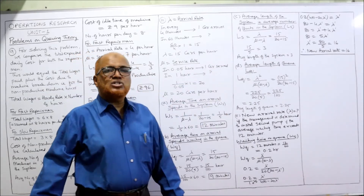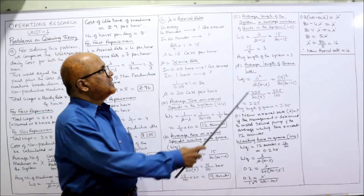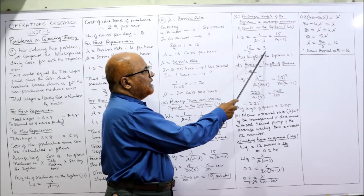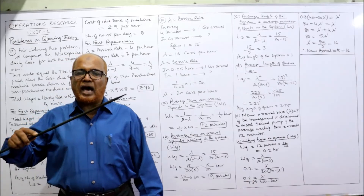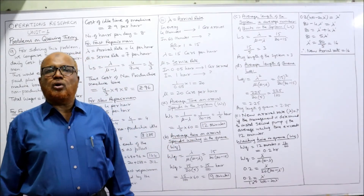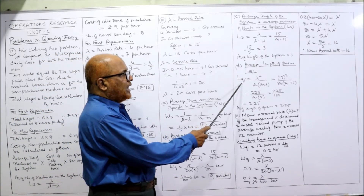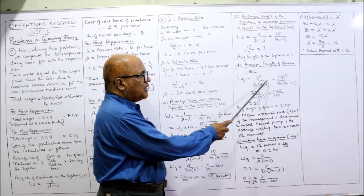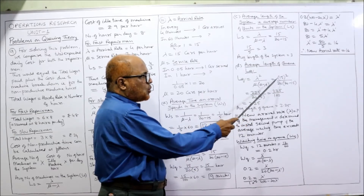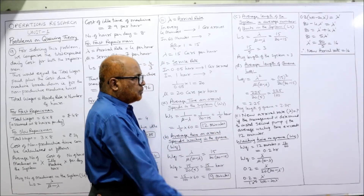Third question: average length of the system (Ls). Ls equals lambda divided by mu minus lambda equals 15 divided by 20 minus 15, which is 15 by 5 equals 3 units. Fourth question: average length of the queue (Lq). Lq equals lambda squared divided by mu times (mu minus lambda), which is 225 divided by 20 times 5, equals 225 by 100, which equals 2.25 cars.